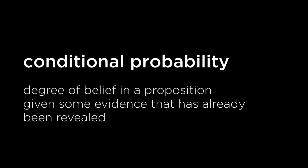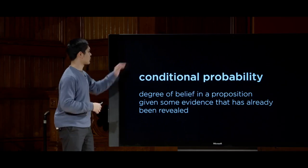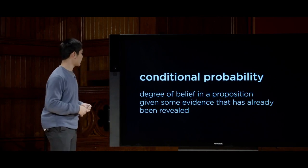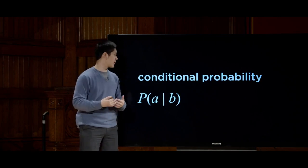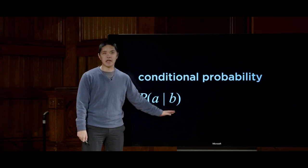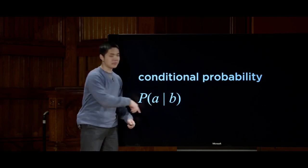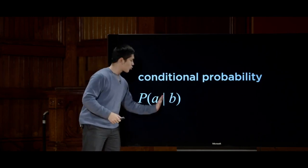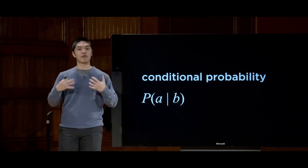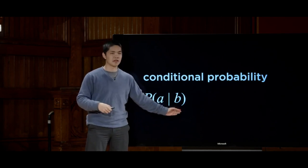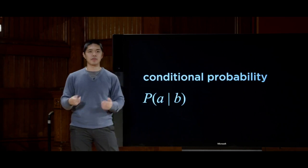Conditional probability is the degree of belief in a proposition given some evidence that has already been revealed to us. We represent it as P(A | B), read as 'the probability of A given B.' The thing on the left of the vertical bar is what we want the probability of — that A is true. The right side is our evidence — that B is true. So the entire expression is: what is the probability of A, given that we already know B is true?